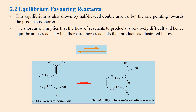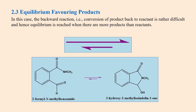Here is a modification: equilibrium favoring reactant arrows. The equilibrium is shown by half-headed double arrows, but the one pointing towards the product is shorter, as shown here. The short arrow implies that the flow of reactants to products is relatively difficult, and hence equilibrium is reached when there are more reactants than products. Similarly, for the equilibrium arrow favoring the product, the backward reaction — the conversion of product back to reactant — is difficult, shown by a short arrow, and hence equilibrium is reached when there are more products than reactants.